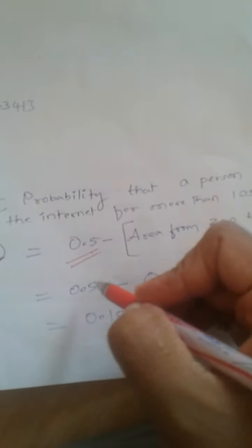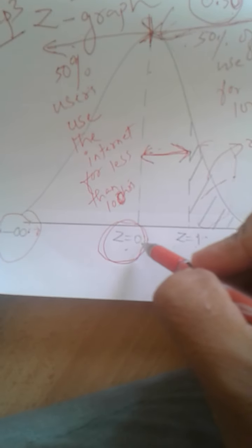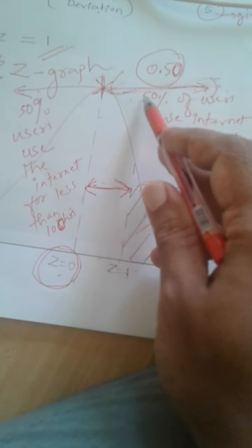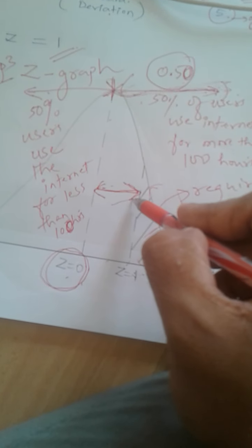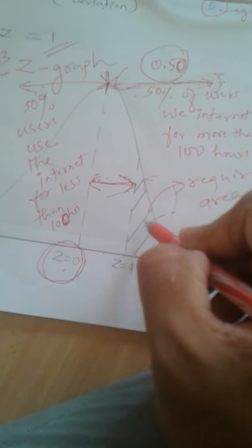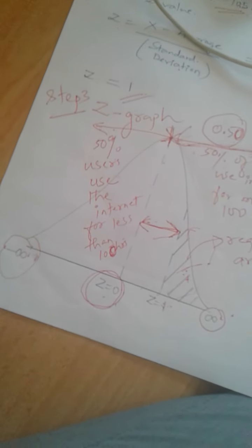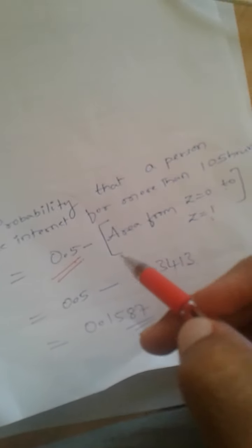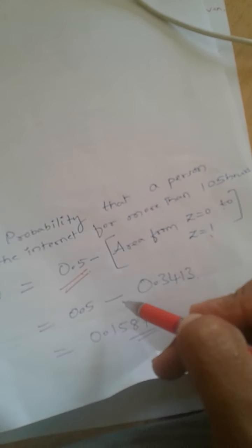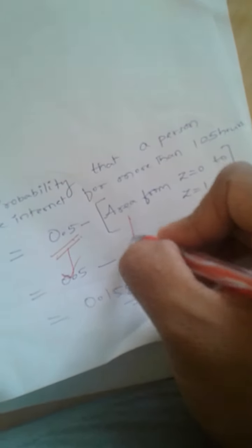We calculate 0.5 minus the area from z=0 to z=1. When we subtract this area from 0.5, we get the required area. The area from z=0 to z=1 is 0.3413 — to get this value we have to refer to the z-table.